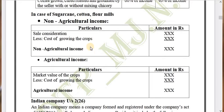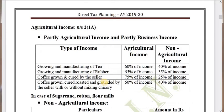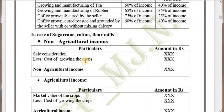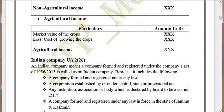Hi everyone, this is Deepika from CADD Nest. We have seen how to segregate agricultural and non-agricultural income in case of tea, rubber, coffee, and chicory mixing. Now, in case of sugarcane, cotton, and floormills, how to segregate agricultural income and non-agricultural income — we have a format for this. The sale consideration minus cost of growing the crops gives you the non-agricultural income, which is taxable.